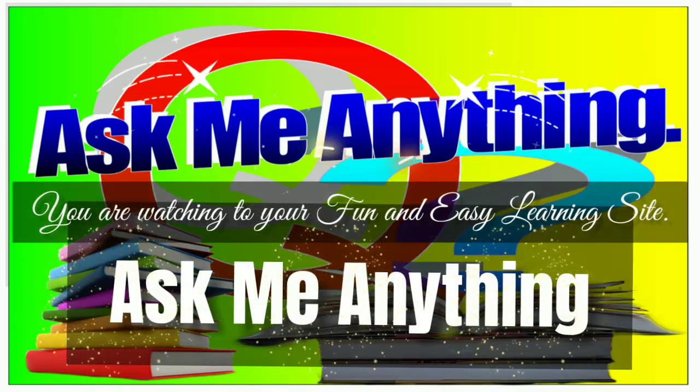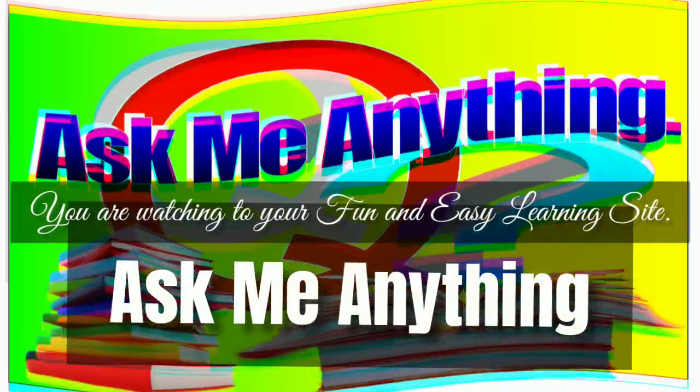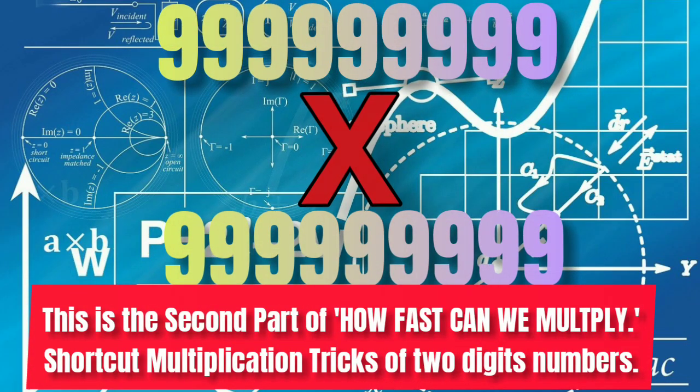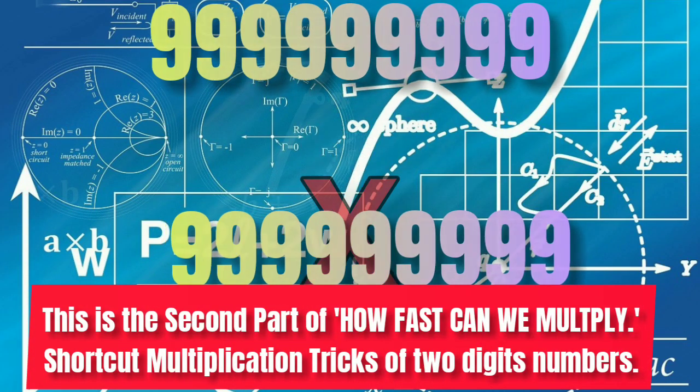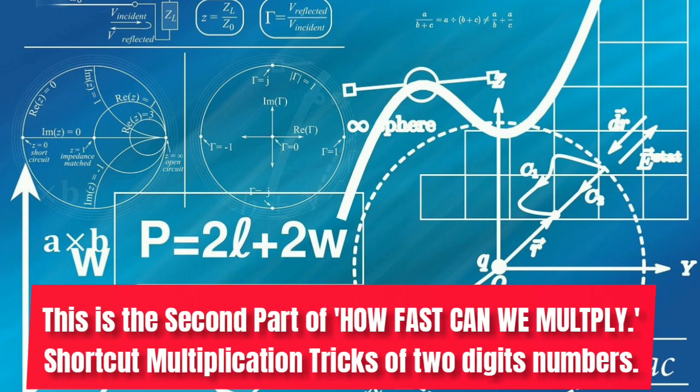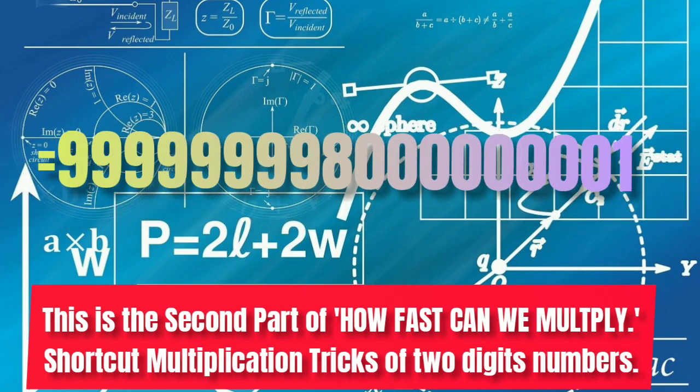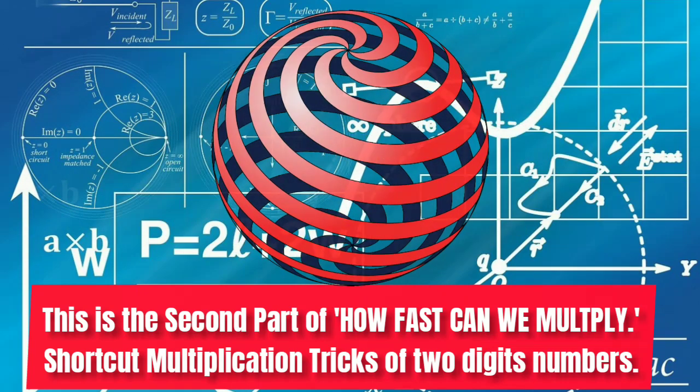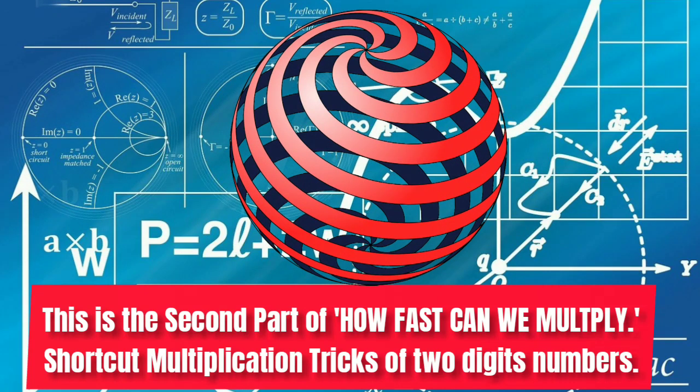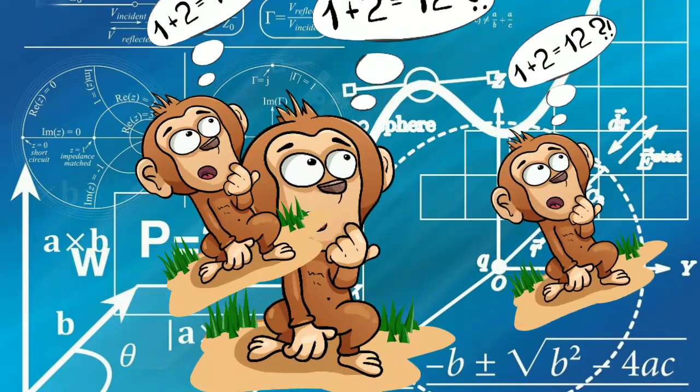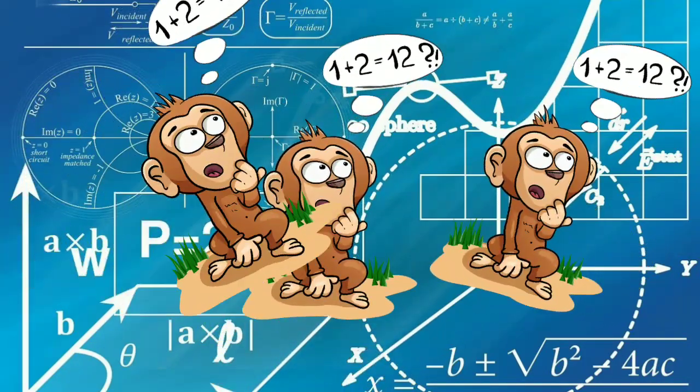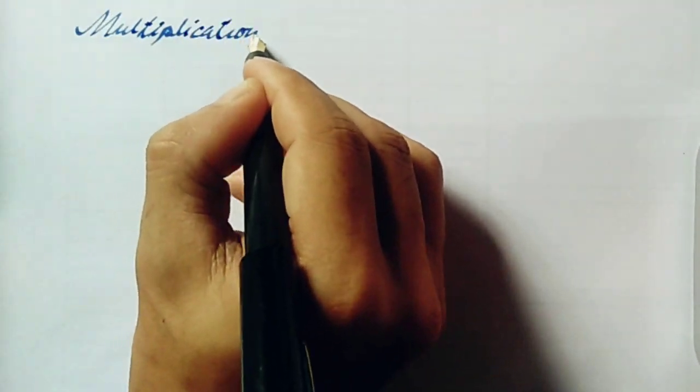You are watching your favorite channel, Ask Me Anything. This is the second part of how fast can we multiply - shortcut multiplication tricks of two-digit numbers. If you want to watch the first part of these mathematics tricks, please press the I button or press the link given in the description box. I will illustrate this second part with the help of pen and paper. Please watch till the end of the video.